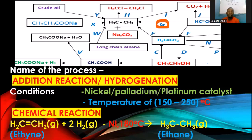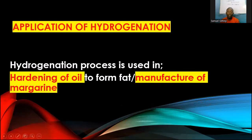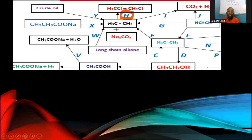An important application of hydrogenation is the hardening of oils to make fats. Oils are essentially unsaturated hydrocarbons containing double bonds; when reacted with hydrogen, they become fats. Fats are generally alkanes — they have carbon-carbon single bonds throughout the structure.